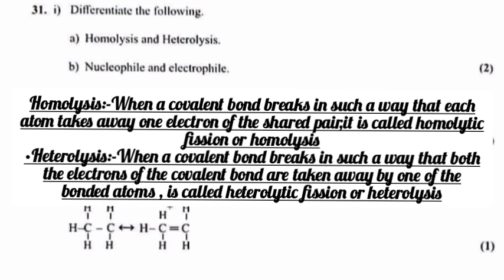Question 31: 1. Differentiate the following. a. Homolysis and heterolysis. Answer: Homolysis: When a covalent bond breaks in such a way that each atom takes away one electron of the shared pair. Heterolysis: When the covalent bond breaks in such a way that the two electrons of the covalent bond are taken away by one of the bonded atoms, it is called heterolytic fission or heterolysis.